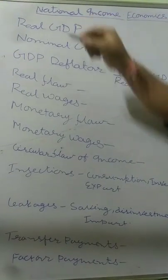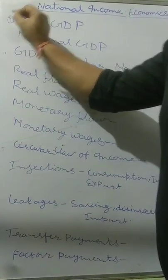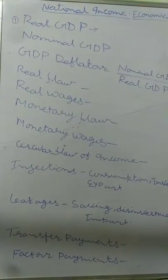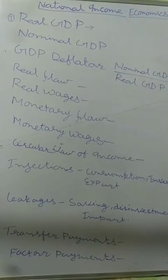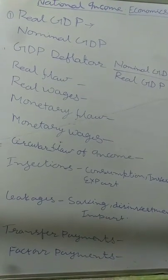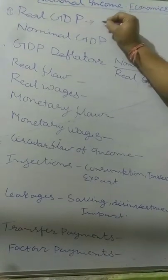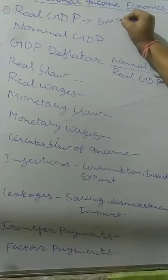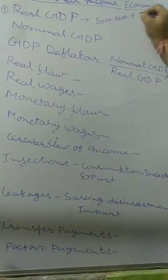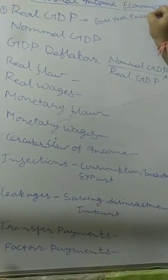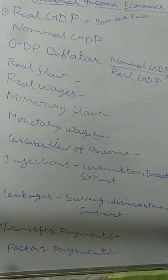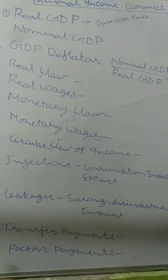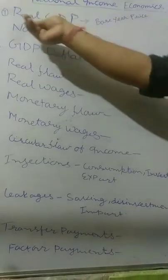First, Real GDP. What is Real GDP? Real GDP is calculated when we calculate GDP — Gross Domestic Product — at base year prices. When we calculate GDP at base year prices, it is called Real GDP.